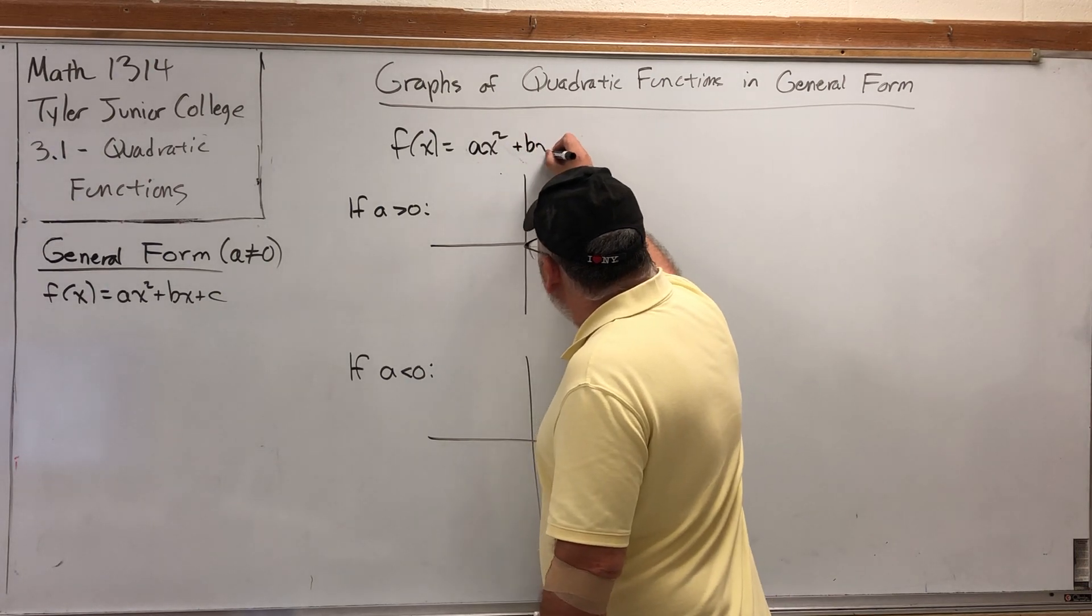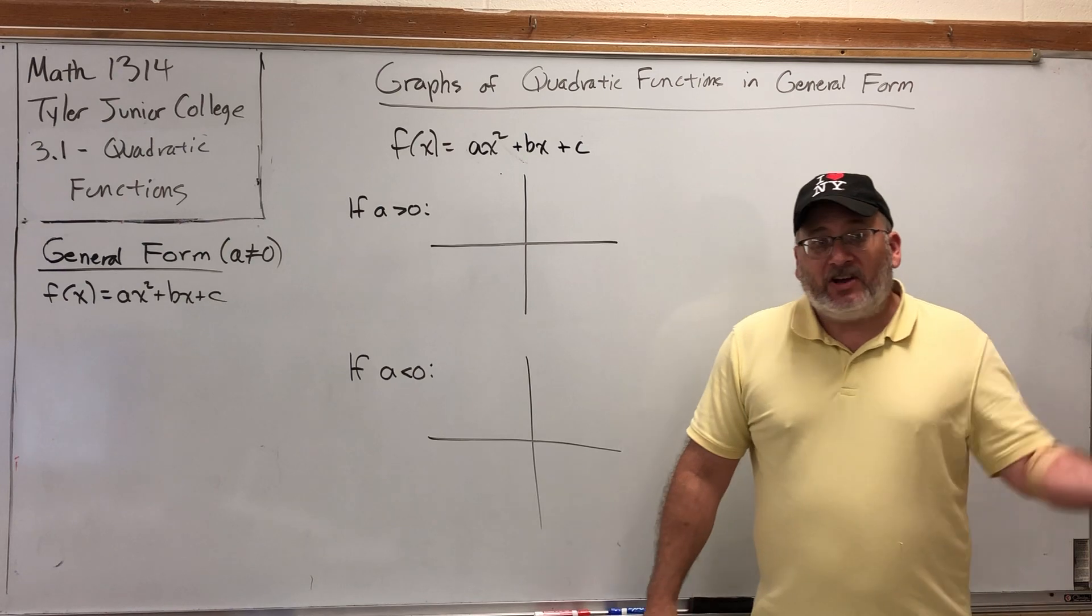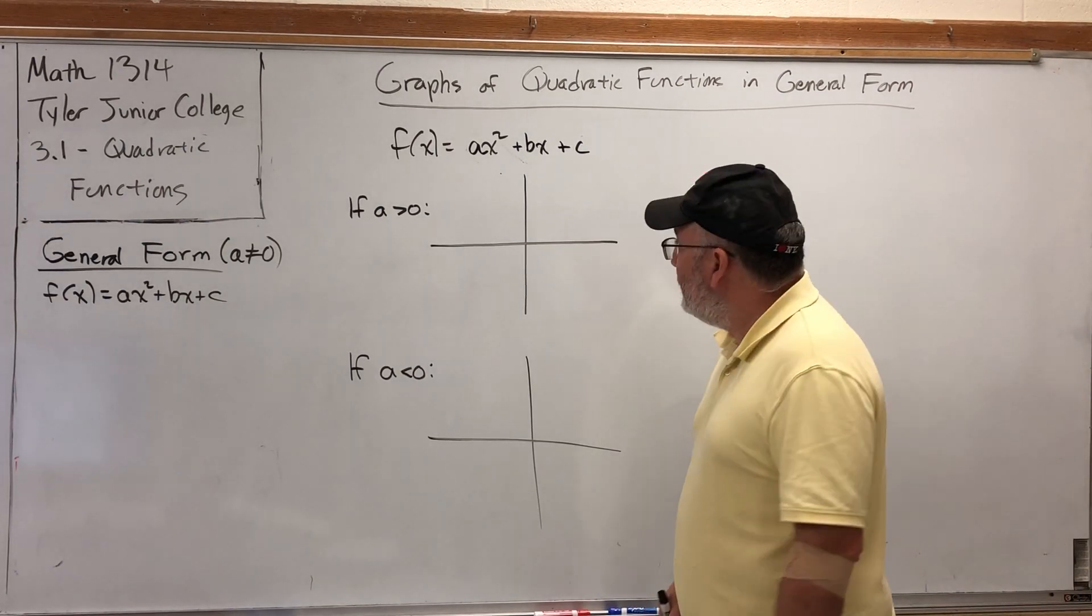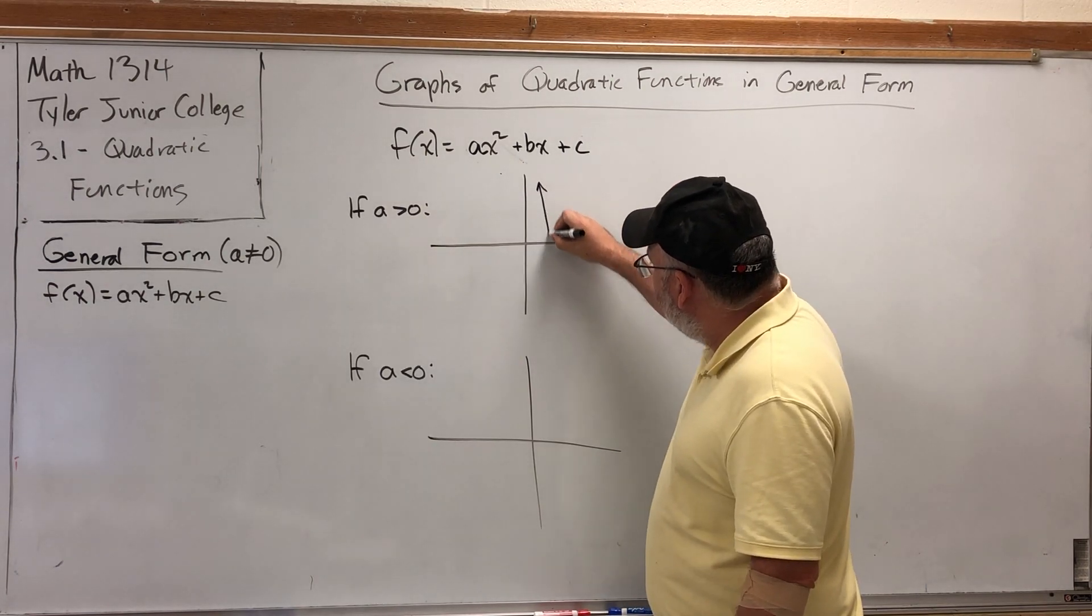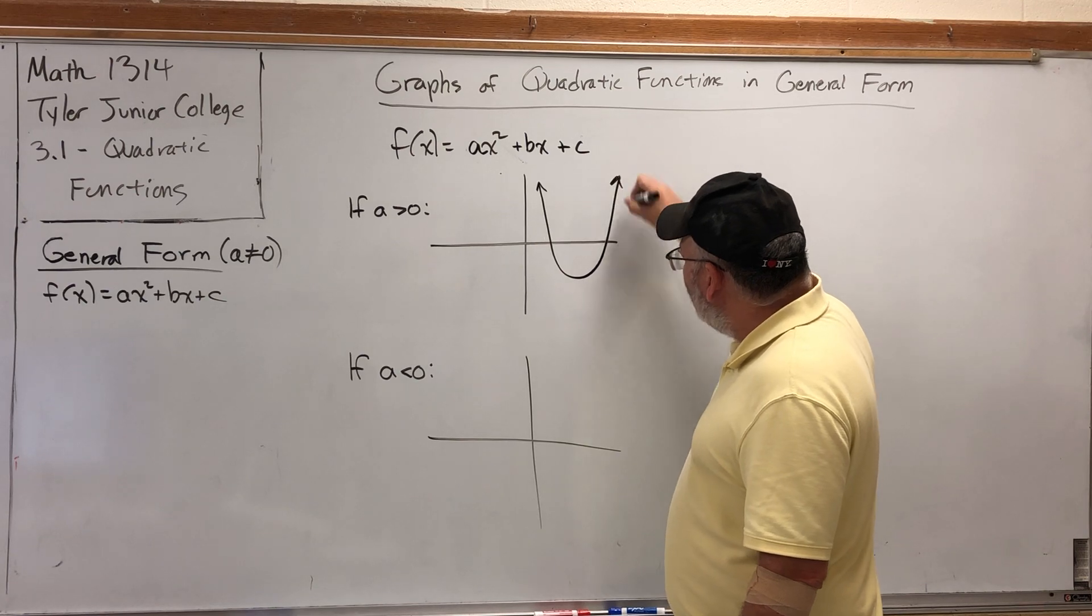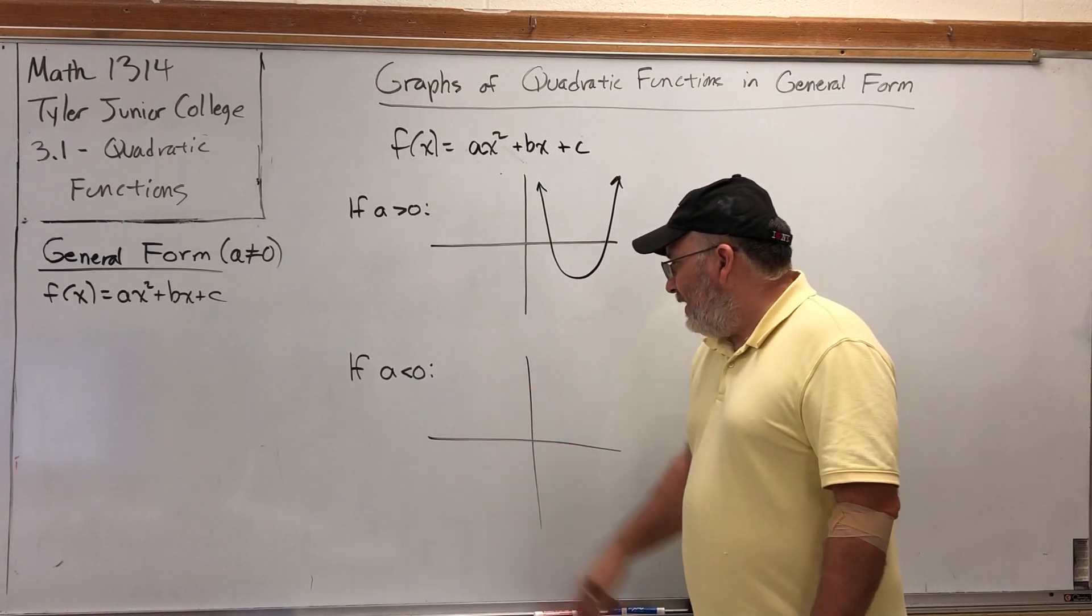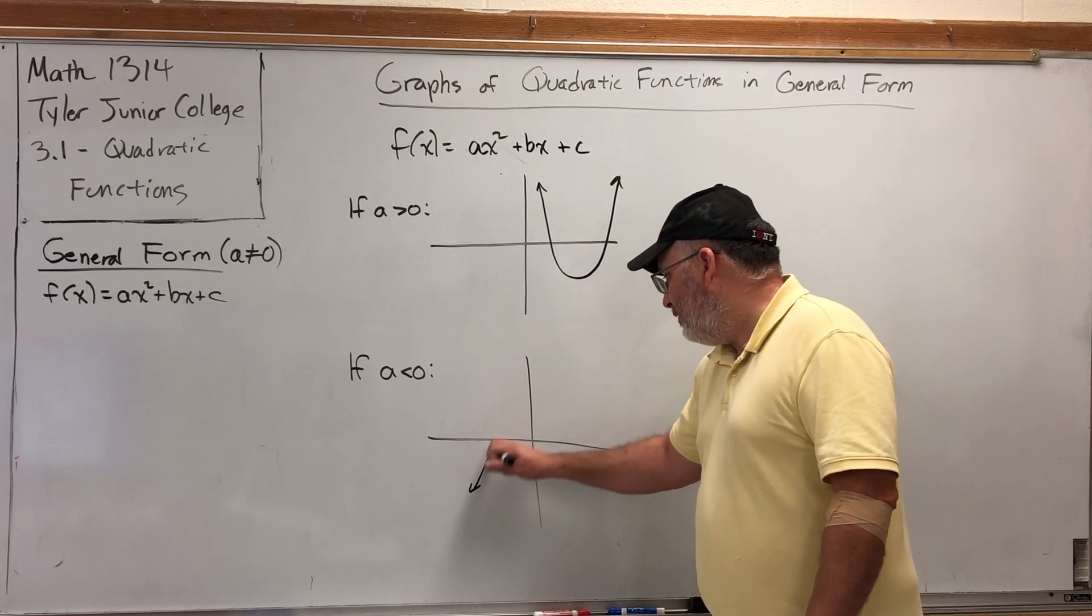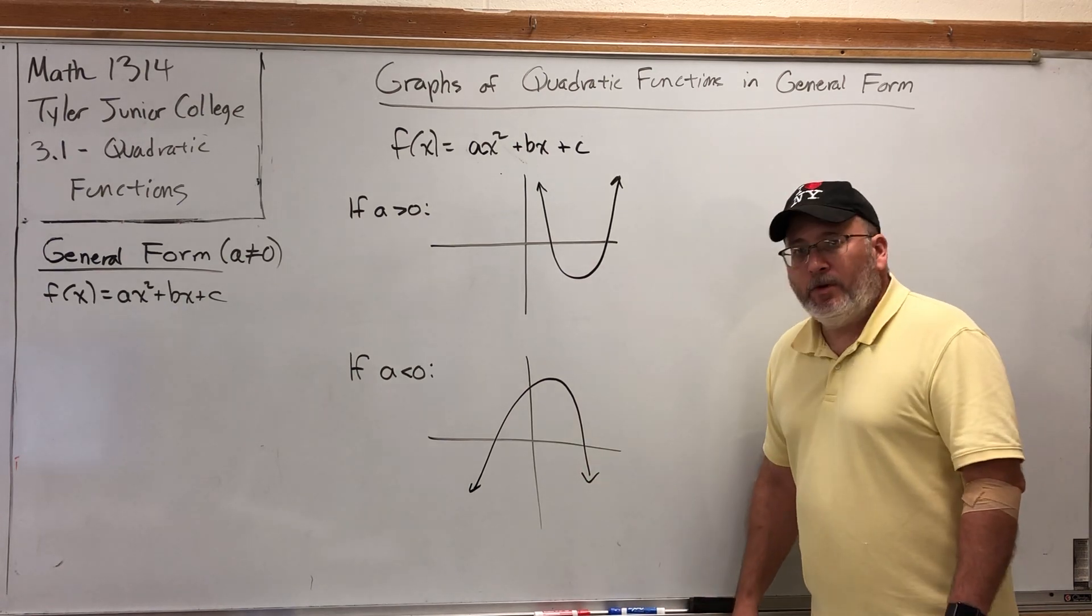Adding the bx and c terms do not change the direction that the parabola opens. So if a is greater than zero, we get a parabola that opens upwards. If a is less than zero, then we get a parabola that opens down.